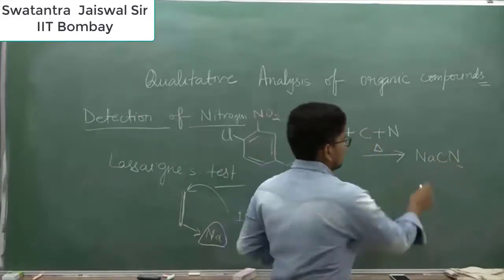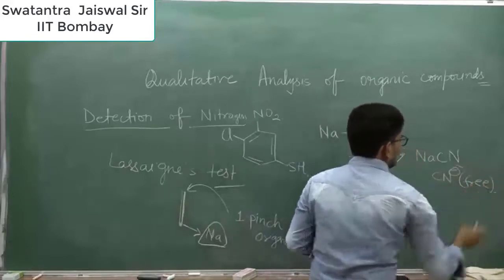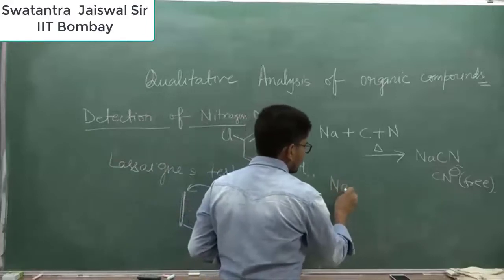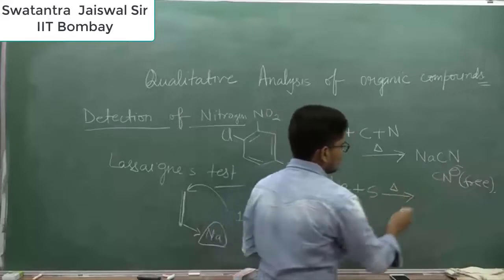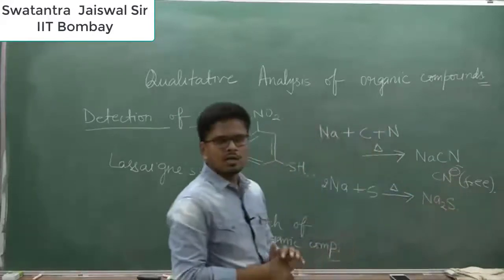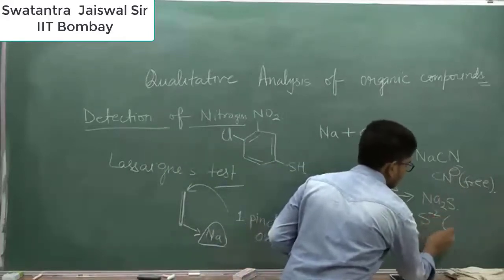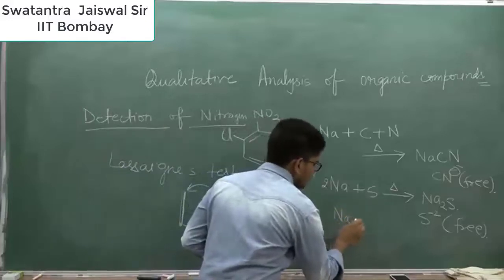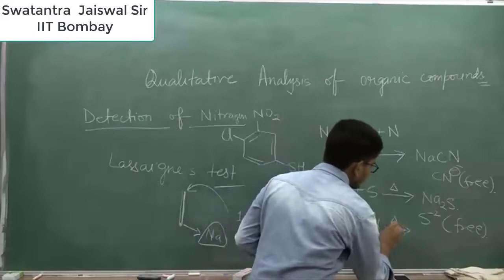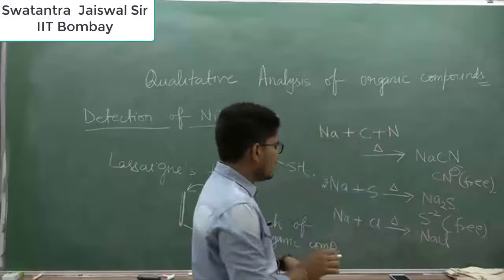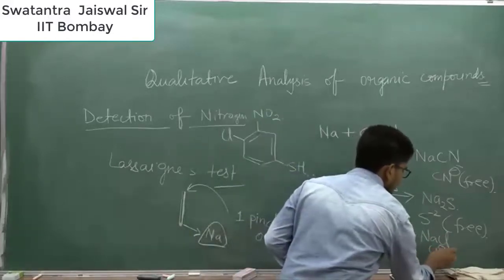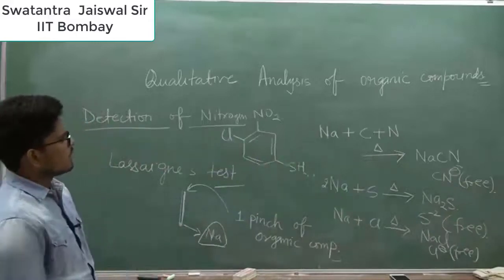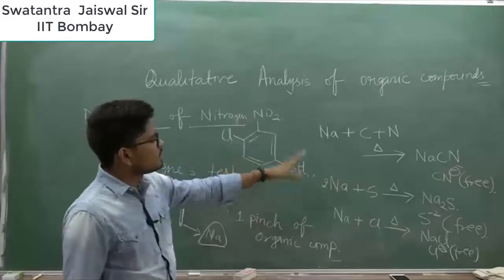So we have converted all the covalently bonded elements — nitrogen, chlorine, and sulfur — into ionic form: free cyanide ion (CN⁻), sulfide ion (S²⁻), and chloride ion (Cl⁻). Now we are free to test these ions by reacting them with other ions.